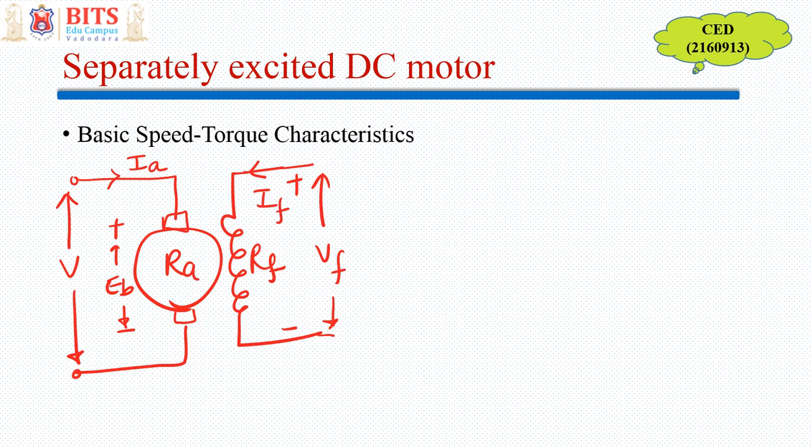As the motor runs, back EMF is developed and the motor takes armature current IA depending on the load. The equations governing this motor: by Kirchhoff's voltage law, V equals back EMF plus IA·RA, where RA is armature resistance, or in short, Eb = V - IA·RA.